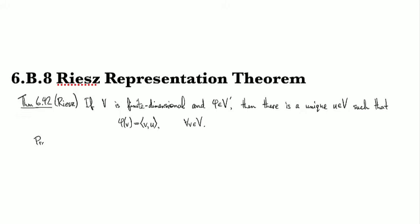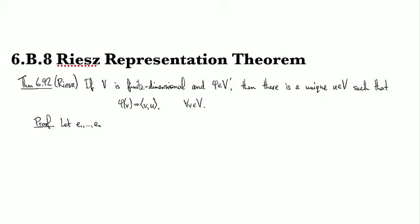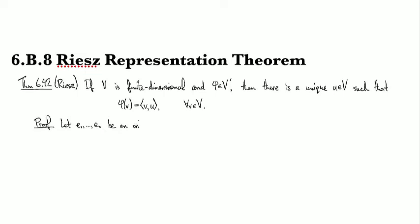So let's see. To prove this, we're going to start off by invoking our orthonormal basis. So in view of the last couple clips, if we've got a finite dimensional inner product space then we can choose an orthonormal basis for it.